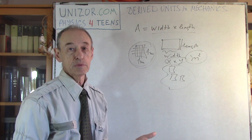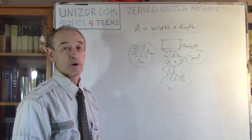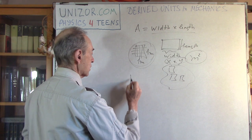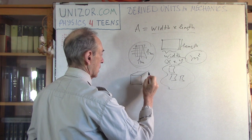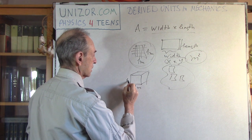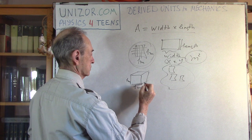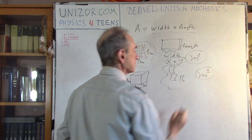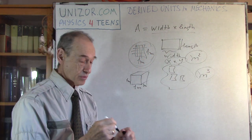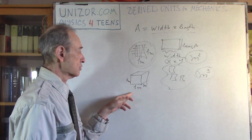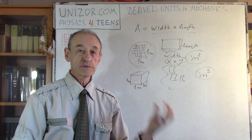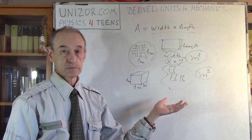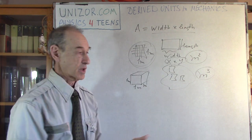Next is volume, and for exactly the same reason we introduce the unit of volume as a cube with every side equal to one meter. It's called the cubic meter. This unit is derived because it uses the unit of length. So the unit of length is used to introduce both the unit of area and the unit of volume, and we use these in physics wherever necessary.